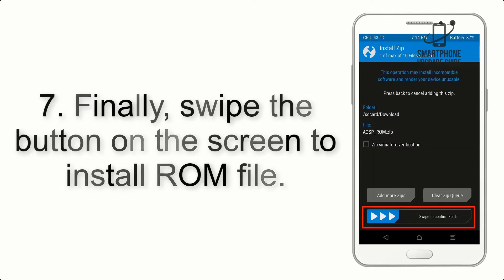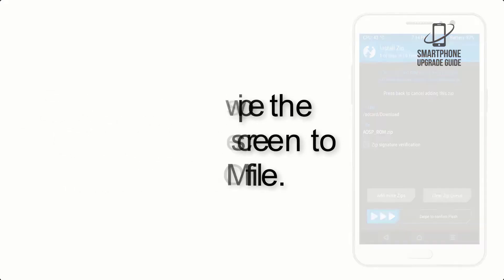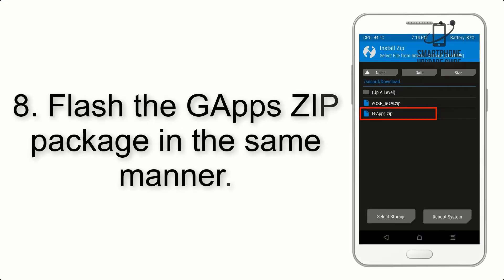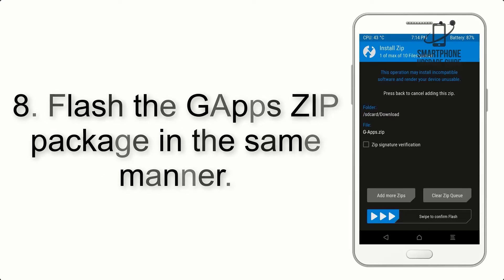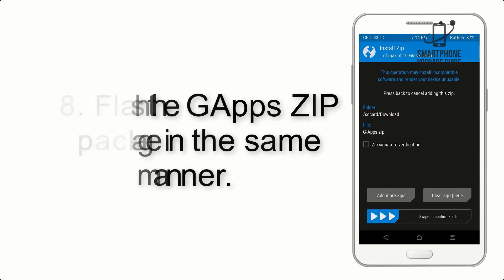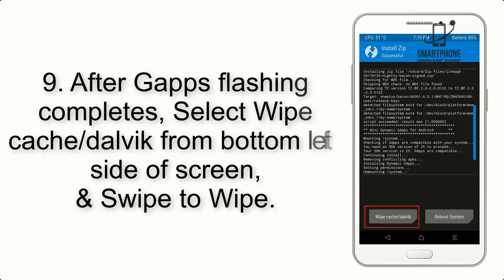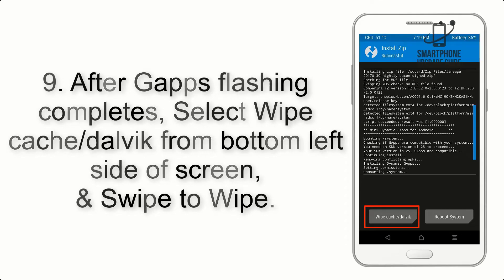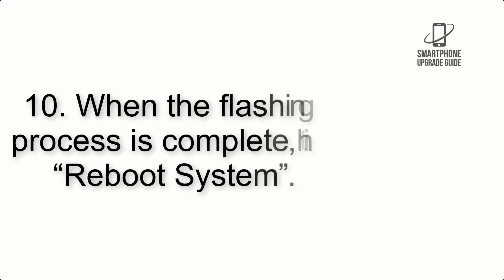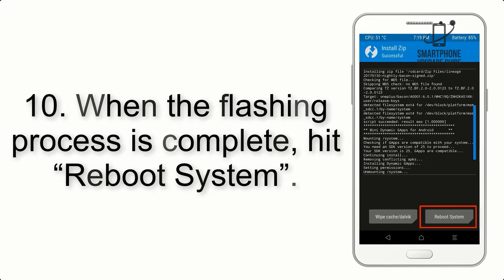Step 7: swipe the button on the screen to install the ROM file. Step 8: flash the GApps zip package in the same manner. Step 9: after GApps flashing completes, select Wipe Cache and Dalvik from the bottom left side of the screen and swipe to wipe.